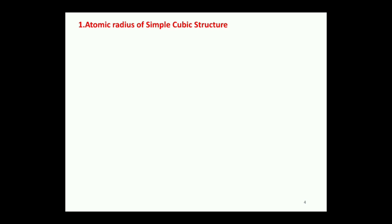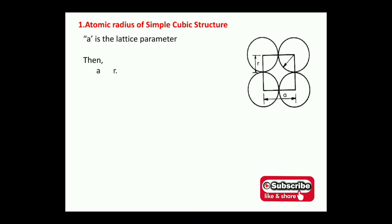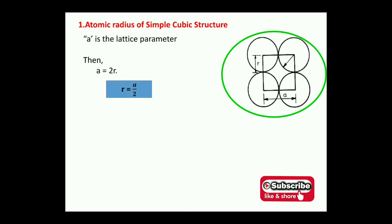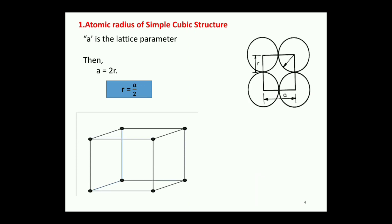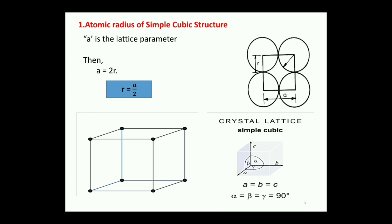For the simple cubic structure, the atomic radius is derived from the diagram. The center-to-center distance is called the lattice parameter 'a', and each atom has radius r. From the figure, a = 2r, so r = a/2. For the simple cubic structure, a = b = c and alpha = beta = gamma = 90 degrees — that is the simplest form of the simple cubic structure.